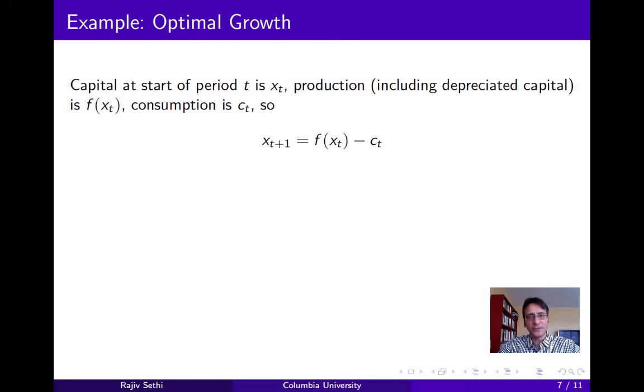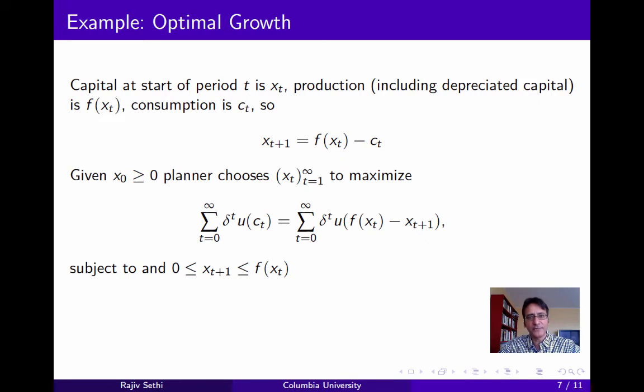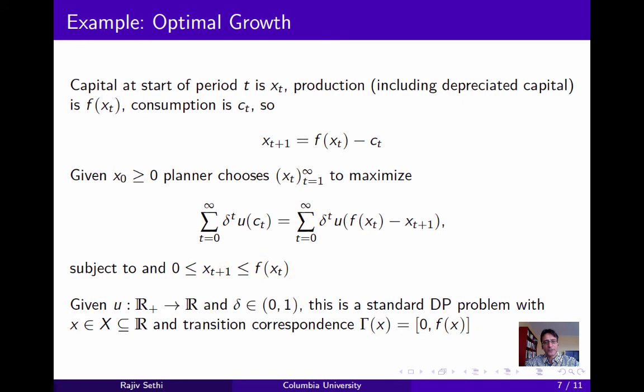Now let's see how this can be used to compute value functions, and we'll do this by going back to the example of optimal growth which you've seen earlier. Suppose that capital at the start of period t is xt, output including depreciated capital is f of xt, and consumption in period t is ct. So capital at the start of the next period is today's output minus consumption. Given some initial level of capital x0, non-negative, the problem is to choose a path xt to maximize the sum of discounted utilities from consumption. And this is subject to the constraint that the capital you leave for the following period can't exceed the output of the current period. Now given some one-period return function u and some discount factor delta, this is a standard dynamic programming problem where the metric space is a subset of the real numbers and the transition correspondence just requires that the capital tomorrow must be somewhere between zero and the total output today.